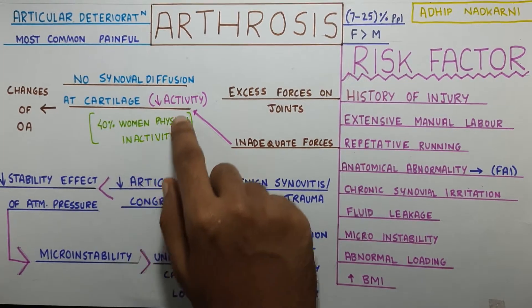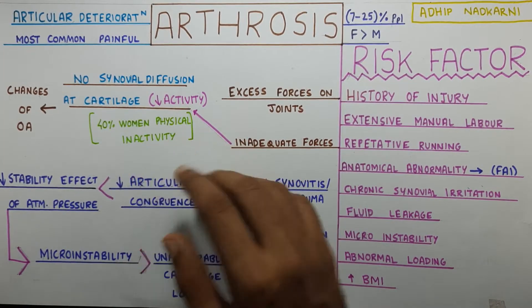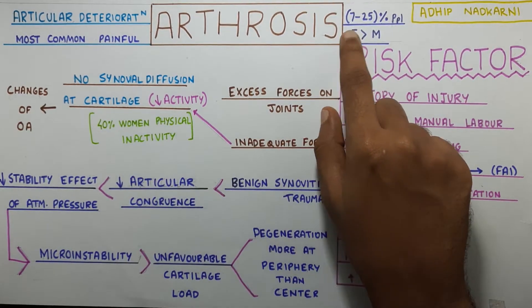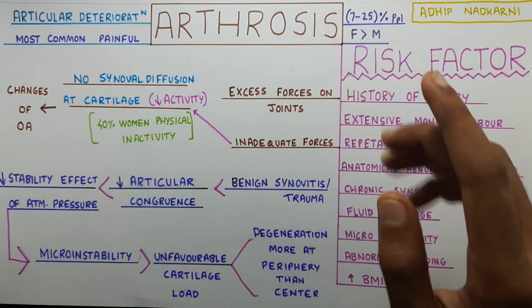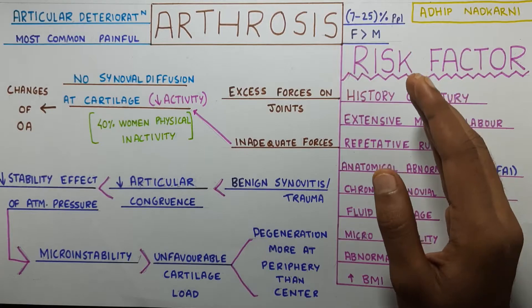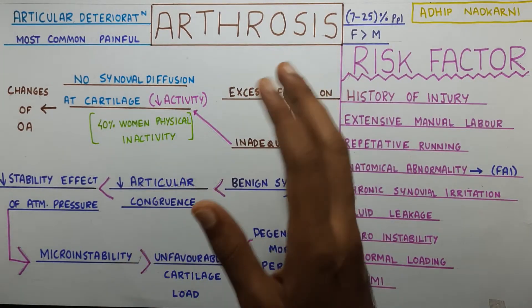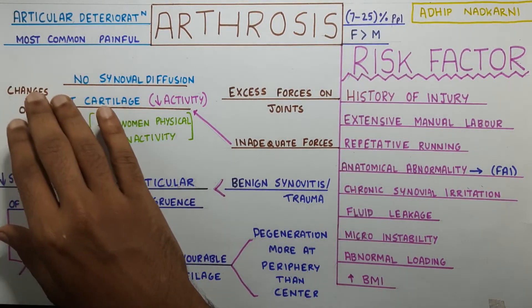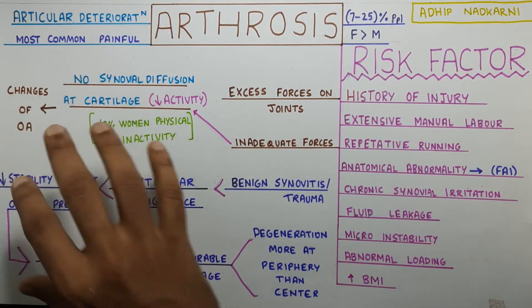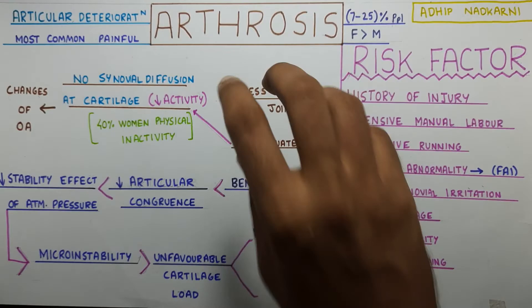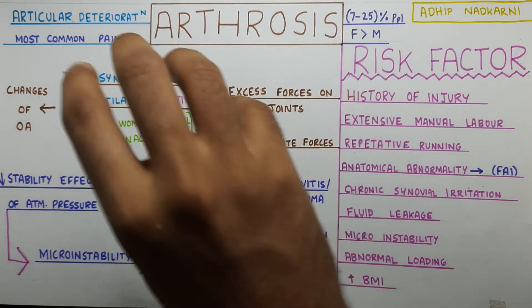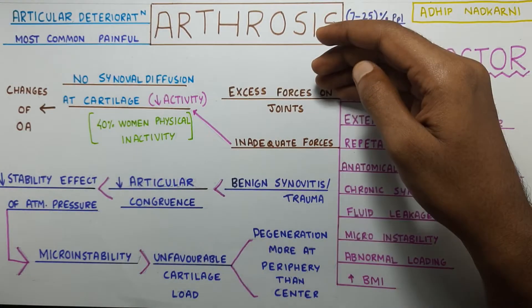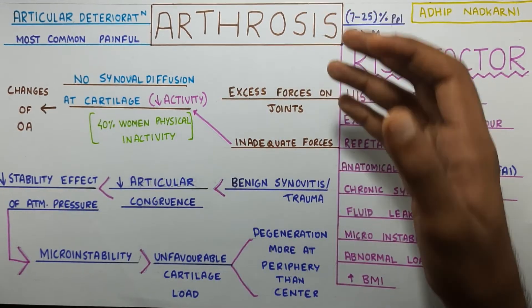No synovial diffusion at the cartilage due to reduced activity is also seen in 40% of women who are physically inactive. This can be one of the reasons for osteoarthritic changes at the hip joint. So this covers the forces aspect — excess or reduced forces.